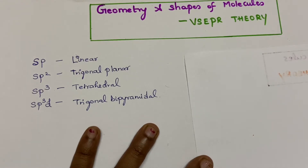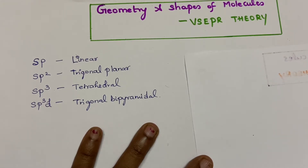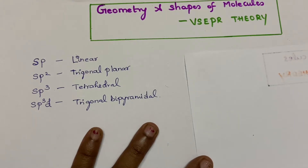Hi students, in this session I am going to teach you about the geometry and the shapes of the molecules, according to VSEPR theory. You would have heard the hybridization such as SP, SP2, SP3, and SP3D and their corresponding geometries. Today I am going to tell you how to derive geometry from hybridization, how it took that specific geometry, and how to derive shapes from the geometry of the molecule. Because often in exams, they will ask you the shape of the molecule. So what is the difference between shape and geometry? Is there any difference or are both the same?